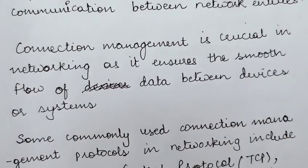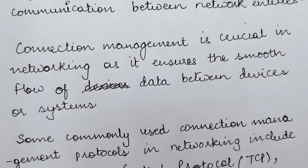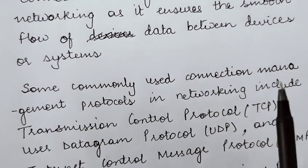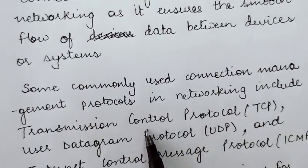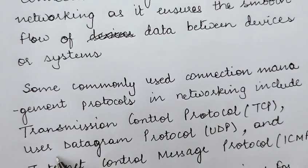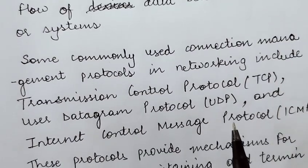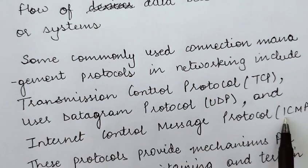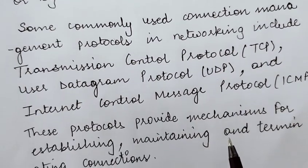Connection management is crucial in networking as it ensures the smooth flow of data between devices or systems. Once a connection is established, it ensures a smooth flow of data between two devices. Some commonly used connection management protocols are TCP (Transmission Control Protocol), UDP (User Datagram Protocol), and ICMP (Internet Control Message Protocol). These protocols provide mechanisms for establishing, maintaining and terminating connections.